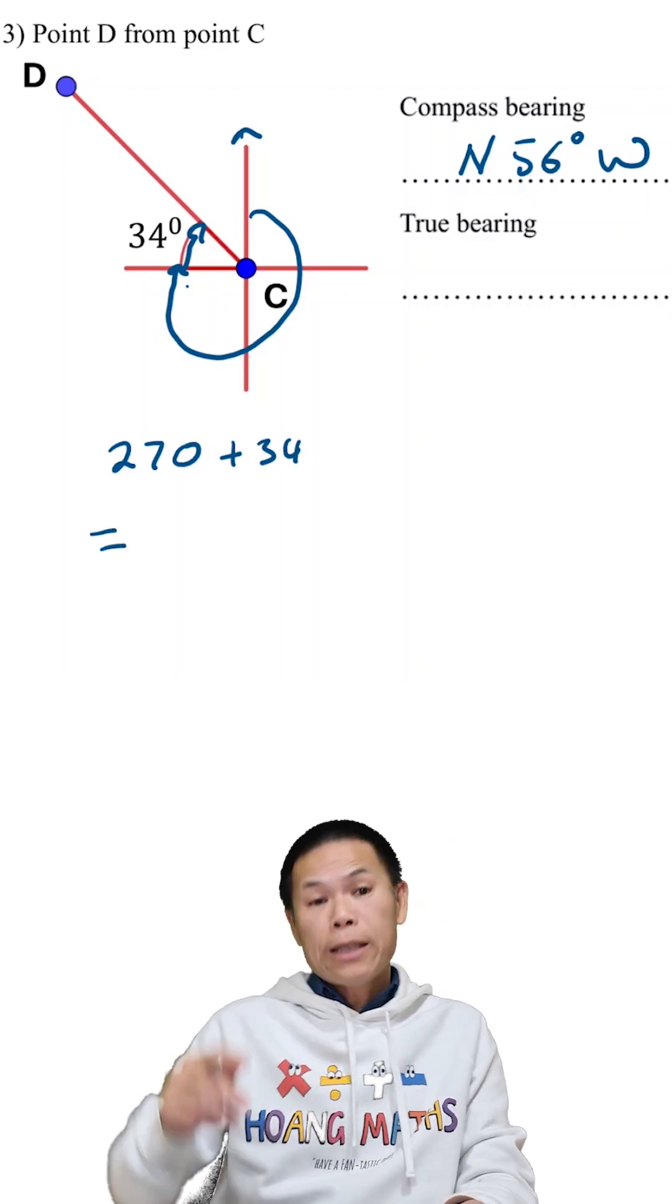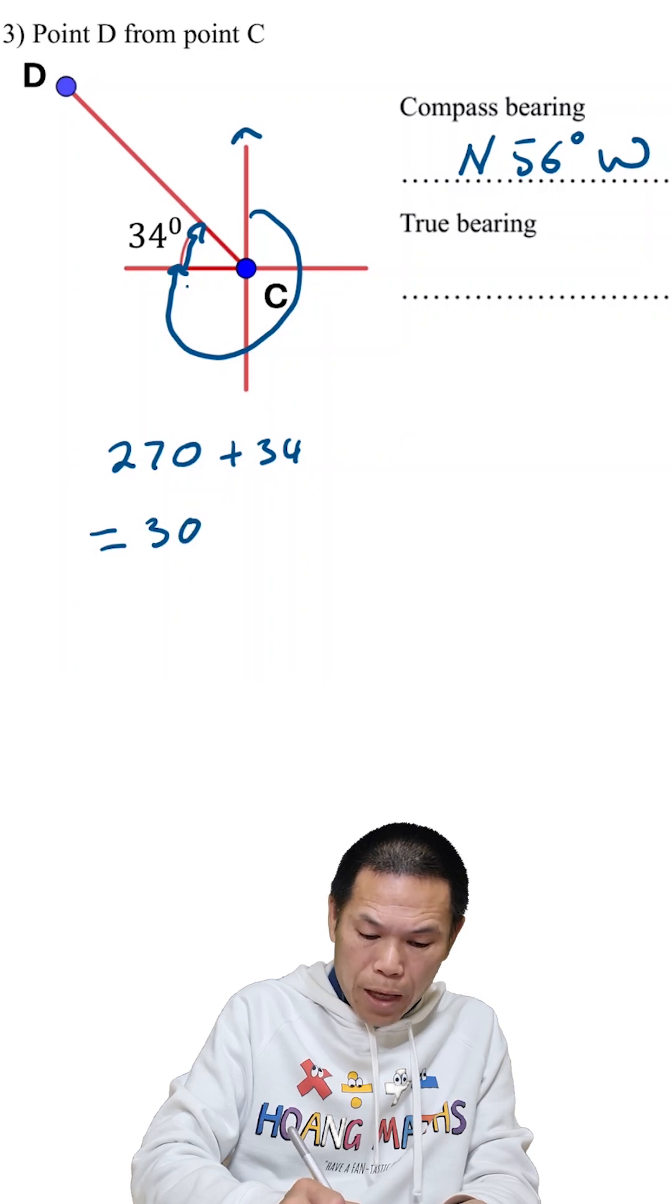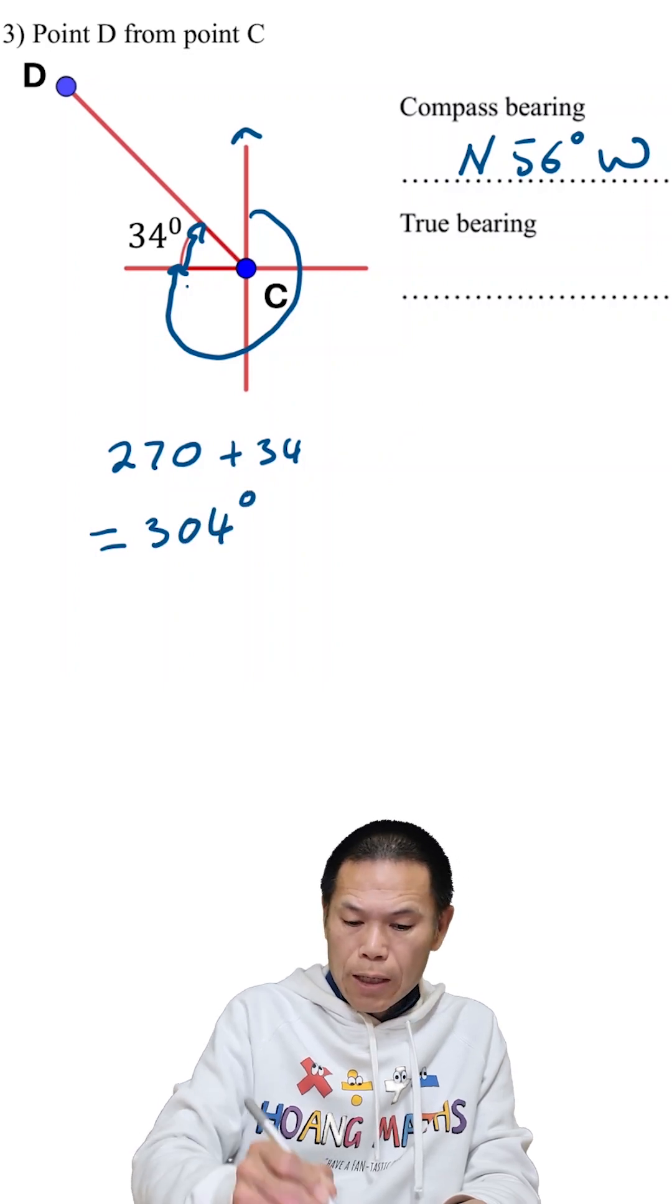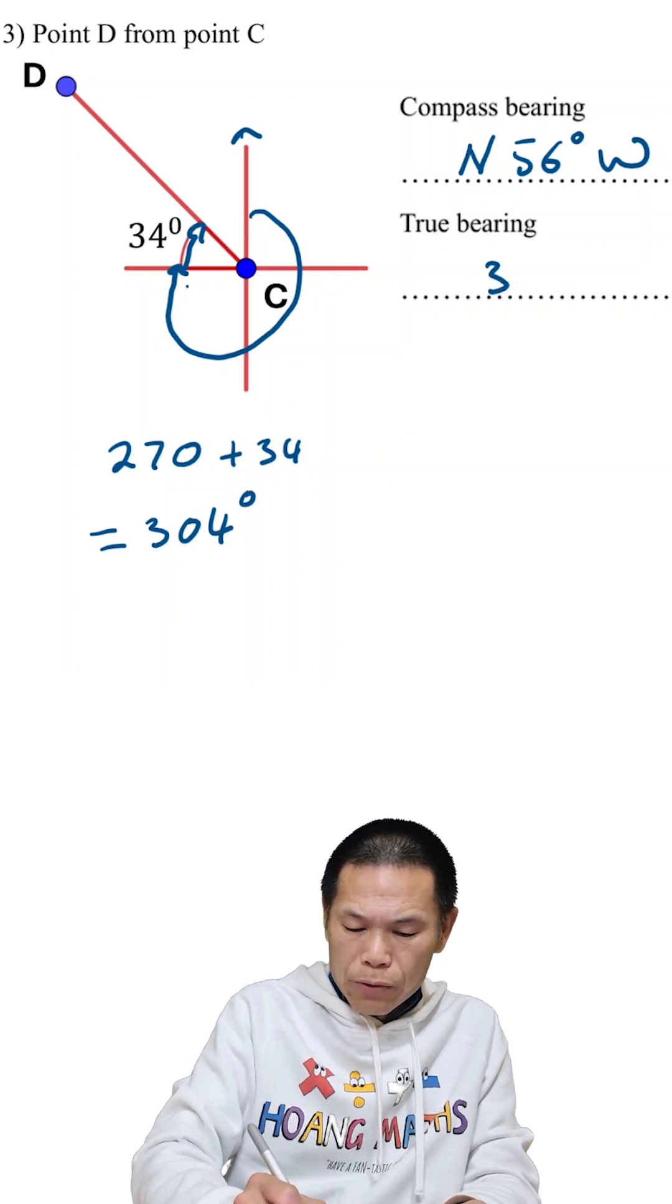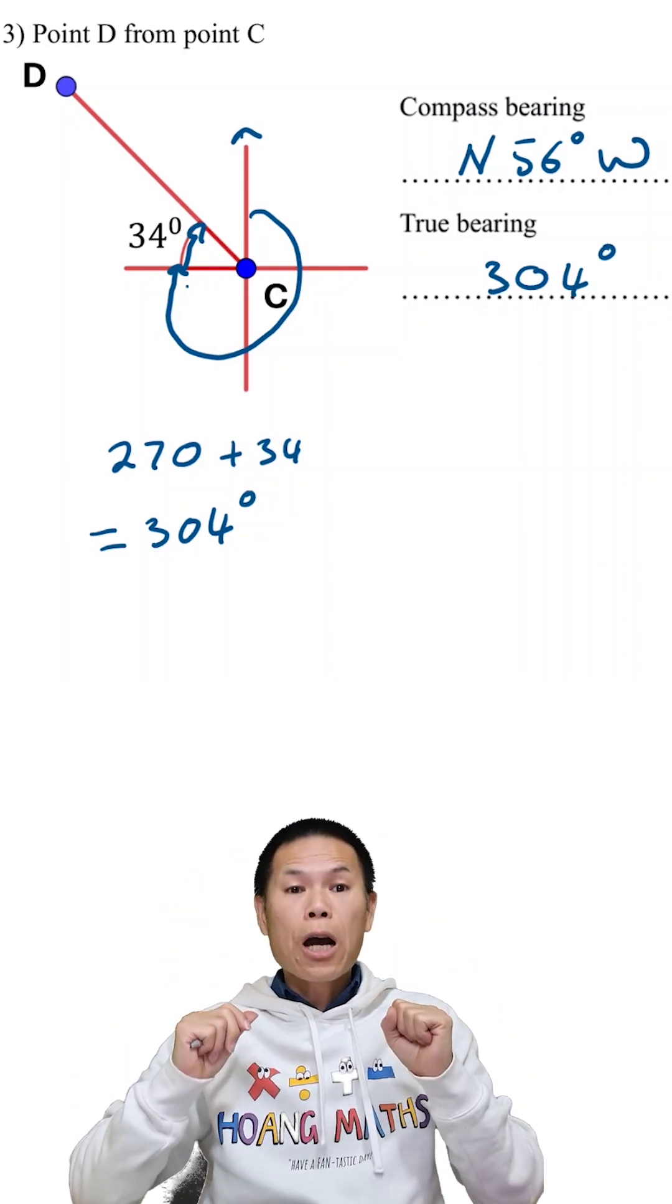270 plus 30 is 300, so that means 304 degrees. There you go.